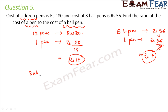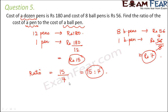Now we find the ratio. The pen's cost is rupees 15 and the ball pen's cost is rupees 7, so the ratio is 15 : 7. Please remember that when the question asks for the ratio of pen to ball pen, pen should always be on top. Do not reverse it. So pen to ball pen is 15 : 7, and ball pen to pen would be 7 : 15. Always maintain the order of the terms.